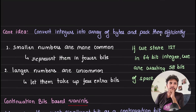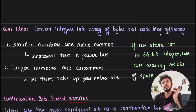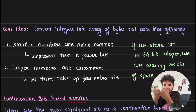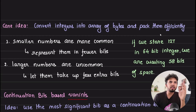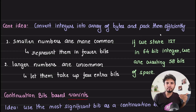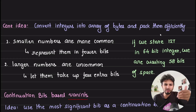So what is a varint, and what's the core idea? The core idea of variable-length integers is simple: you convert an integer into an array of bytes and pack them as efficiently as possible. The key insight it operates on is that smaller values are more common, so represent them in fewer bits. Larger values are uncommon, so let them take up a little extra space.